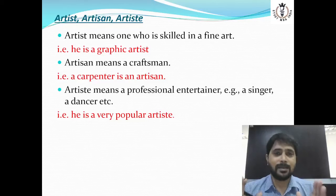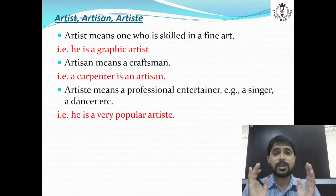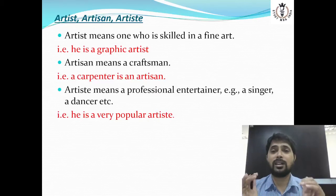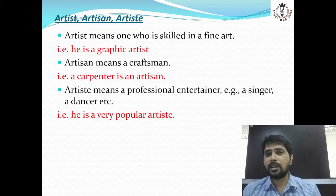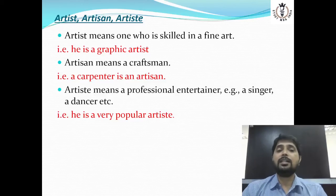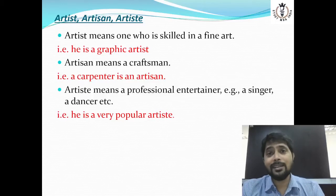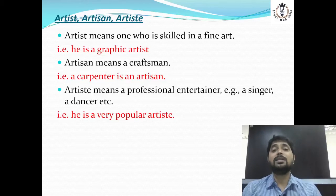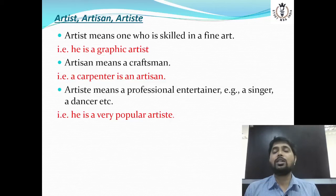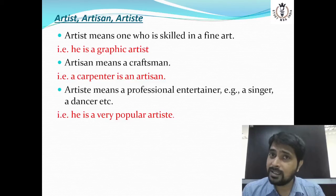Artisans for example — agar statues banate hain, wax ka statue ya phir stone statues, toh yeh sab banane wale ko hum log artisans bolte hain. Next word: 'artiste' — spelling A-R-T-I-S-T-E. Spelling mein agar halka sa bhi change aata hai, uske sense badal jaate hain. Artiste means a professional entertainer — jo singer, dancer, musician hote hain, woh artiste hote hain. Toh in teeno mein fark clear ho gaya hoga.